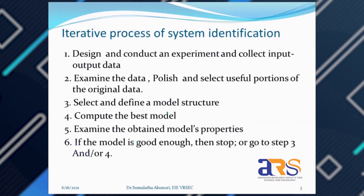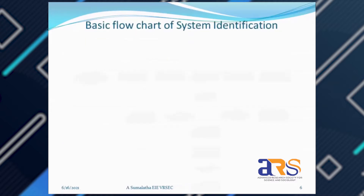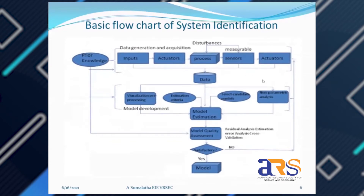Based on the order, complex higher-order models can be approximated to lower-order models like first-order or second-order models with dead time. We then examine the obtained model's properties to see whether it gives a good match. If the model is a poor representation of the process dynamics, we repeat the process and select another model structure. This step is called model validation, and it is the general flow of conducting system identification.